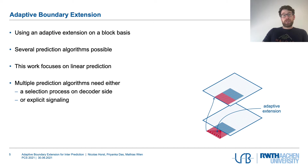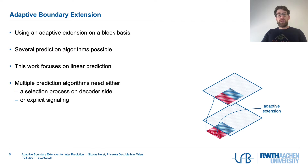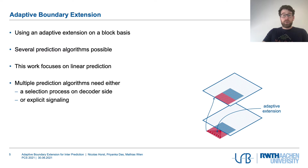Adaptive boundary extension is derived per block rather than using a global extension. Several prediction algorithms are possible; our work focuses on linear prediction using intra angular prediction algorithms. With multiple prediction algorithms, we don't need either a selection process on the decoder side or explicit signaling.